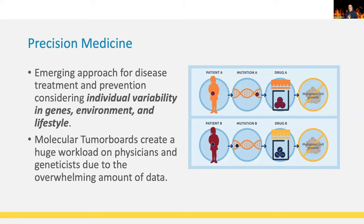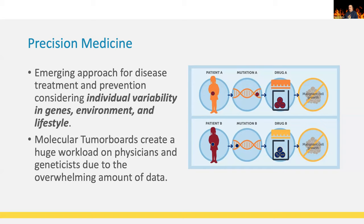The solution is structured data — a FHIR-based genomic report. First, let's look at precision medicine: it's a newer approach to treatment and prevention that considers the genome of the individual patient, because there are significant differences in genomes from patient to patient. Therefore, we can't treat everyone the same in certain diseases. Molecular tumor boards face this issue — they're not looking at what type of cancer it is, but focusing on what variants are causing the cancer.